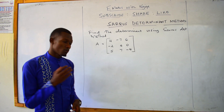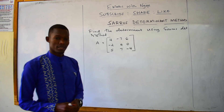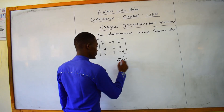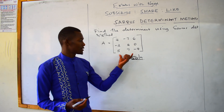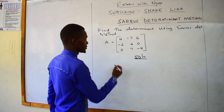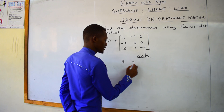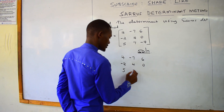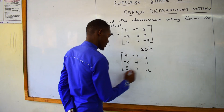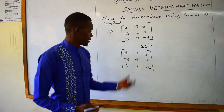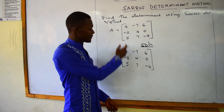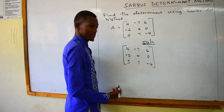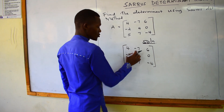How do you work out determinants using the Sarrus method? This is a very simple way. For the solution, you first write the matrix you have. So you have 4, negative 7, 6, negative 2, 4, 0, 5, 7, negative 4. Then you take the first and second columns and write them beside the matrix.